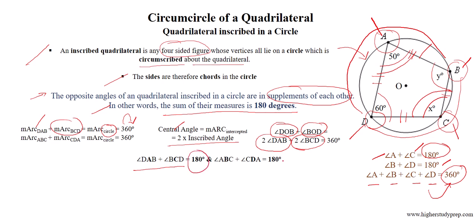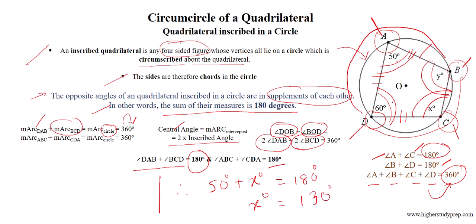From this, angle DAB plus angle BCD equals 180 degrees, and similarly angle ABC plus angle CDA equals 180 degrees. Therefore, 50 degrees plus X equals 180 degrees, which gives X equals 130 degrees. And Y equals 120 degrees.